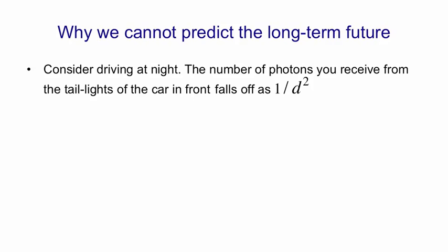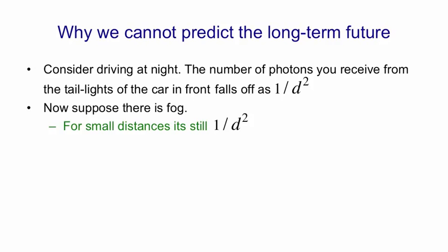That's assuming that the air is clear. But now suppose there's fog. Over short ranges, the number of photons you get from the taillights in front of you still falls off as 1 over d squared.